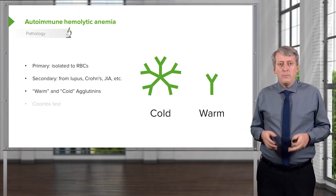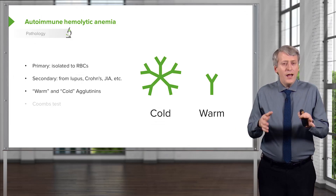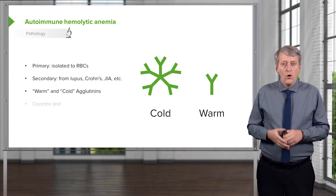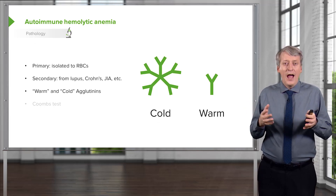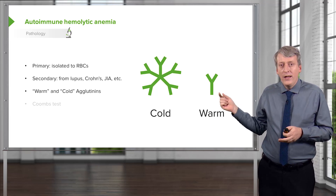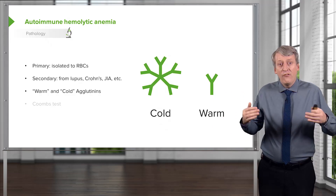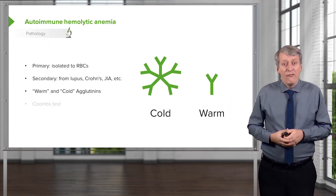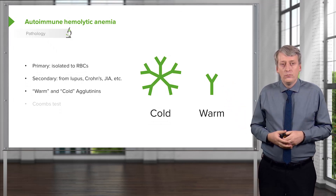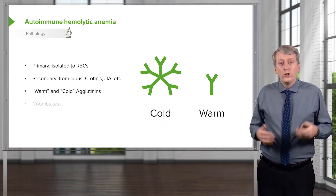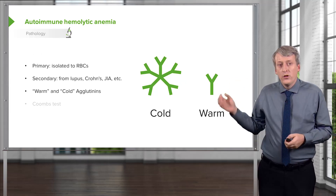We describe these patients as having warm or cold agglutinins. When things are warm, it's easier for them to react. So if I'm an IgG with only one FAB region, it better be warm for me to react. If I have five FAB regions, like an IgM would have, I can react when it's colder. So when you hear cold agglutinins, those are IgMs, and when you hear warm agglutinins, those are IgGs.